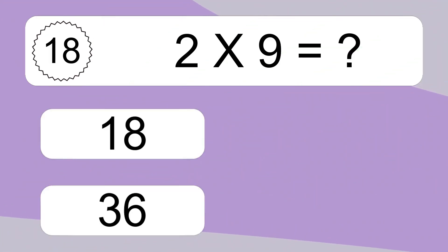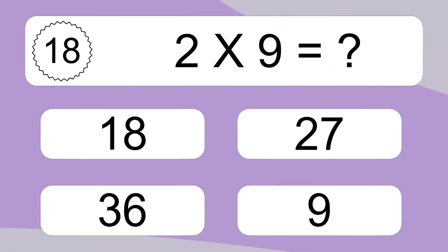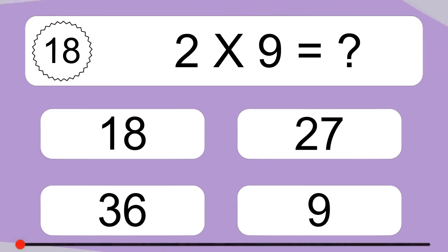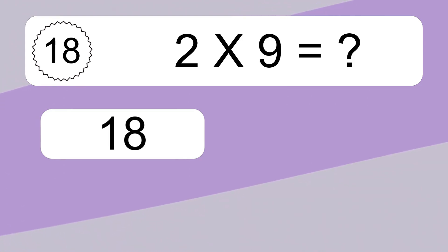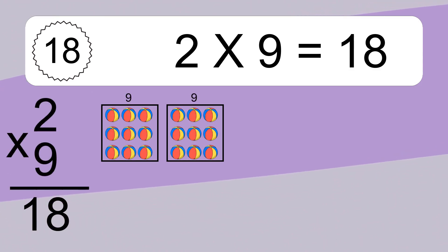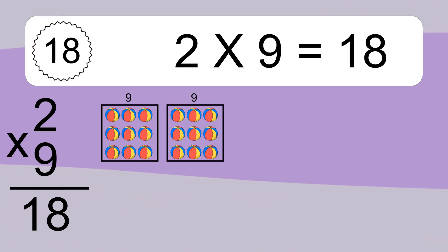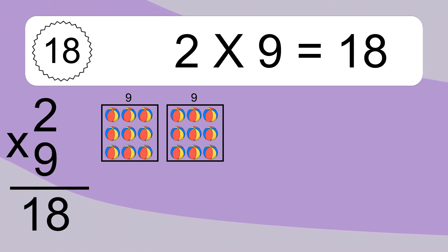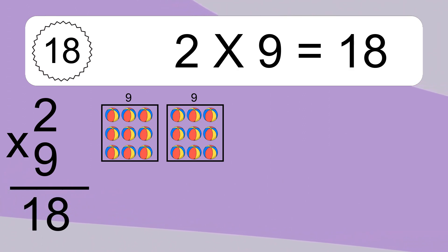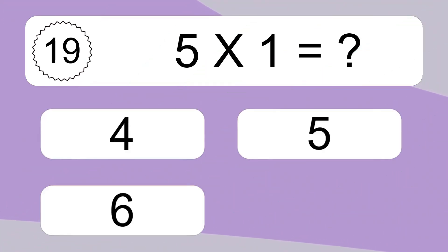2 times 9 equals what? 5 times 9 equals 8. We have 2 boxes, and each box has 9 colorful balls inside. If you count all the balls in all the boxes together, you will have 2 times 9 balls. This equals 18 balls.